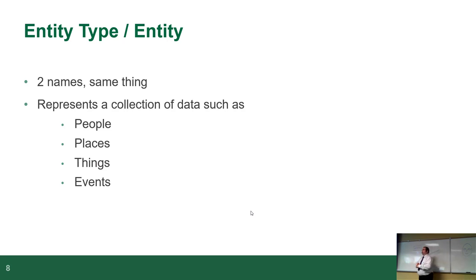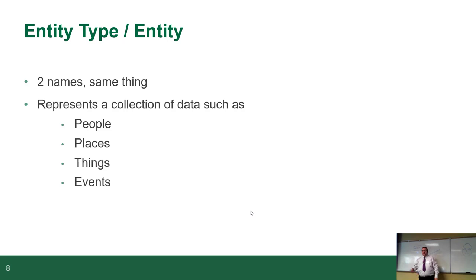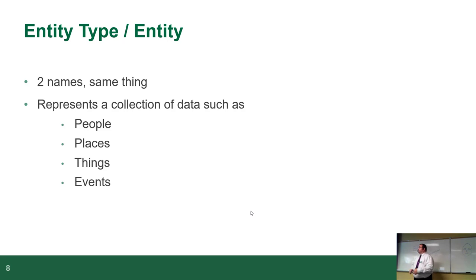The first term is entity, or entity type — those two are used interchangeably depending on which textbook you look at. An entity represents a thing. It could be anything: you're a thing, this room is a thing, your laptop is a thing, these desks are a thing. We're all humans, so at the entity type level we're defining 'human' as a type. Even a concept is a thing. Essentially, it represents a thing — that's an entity.